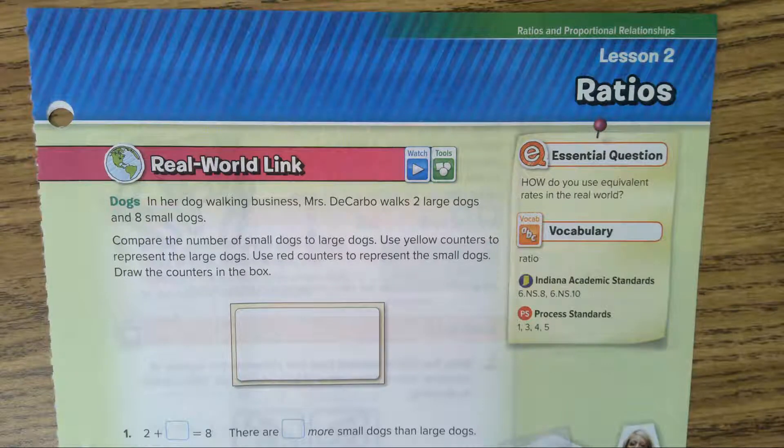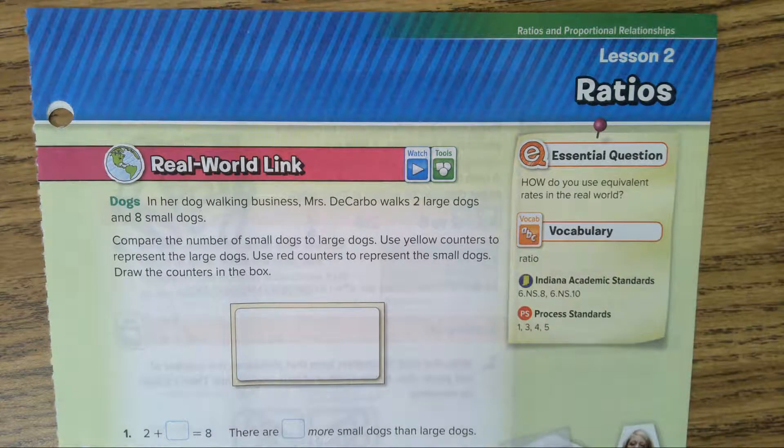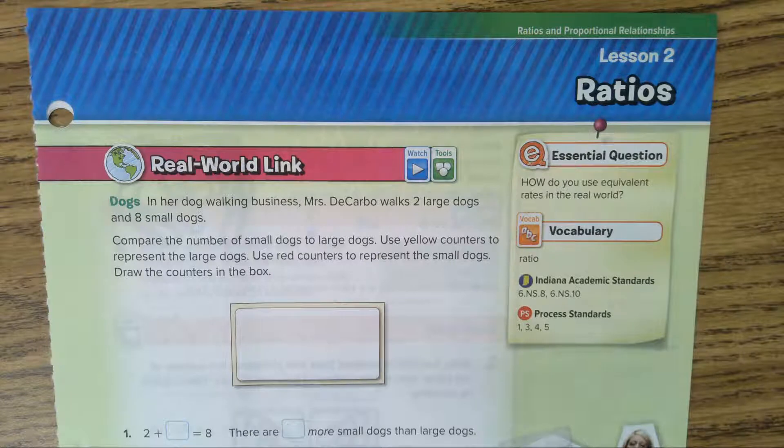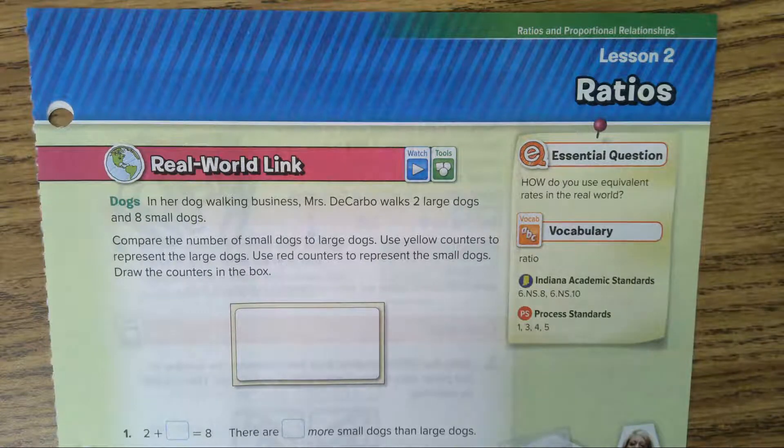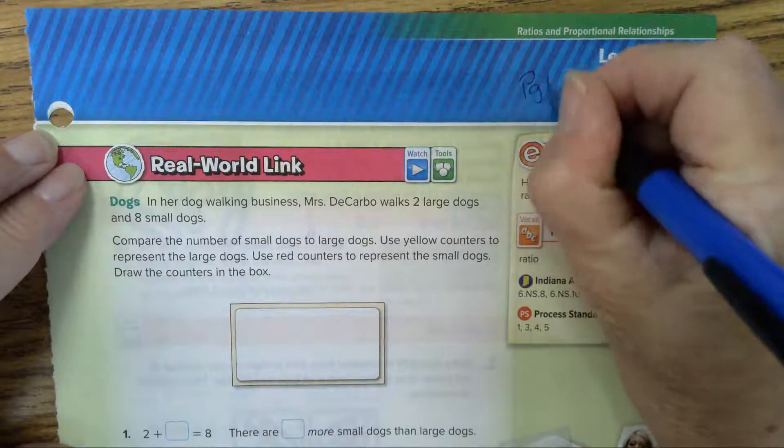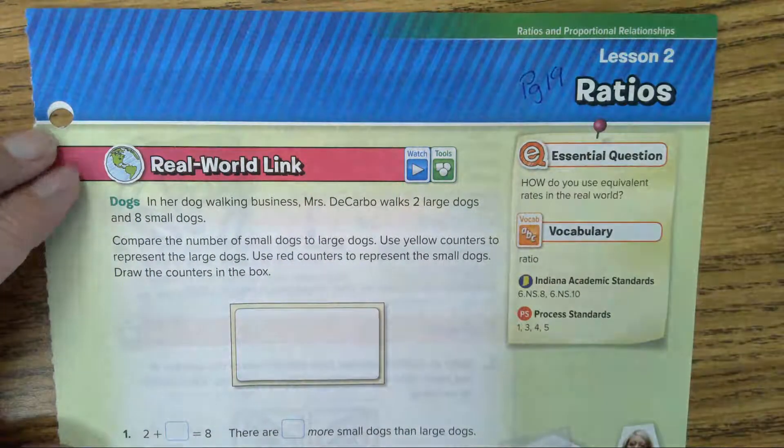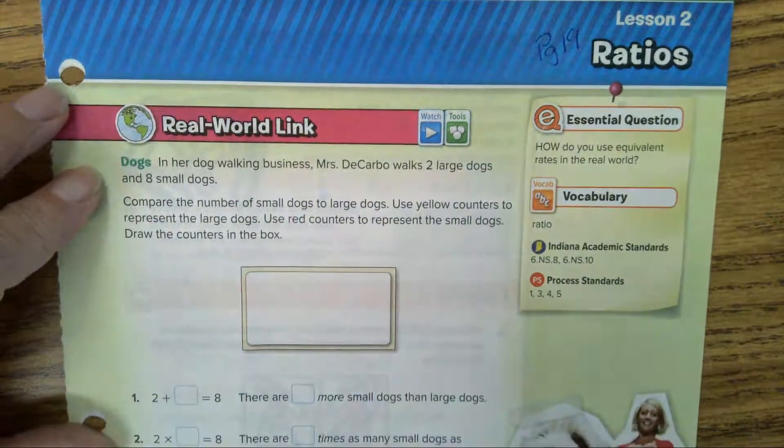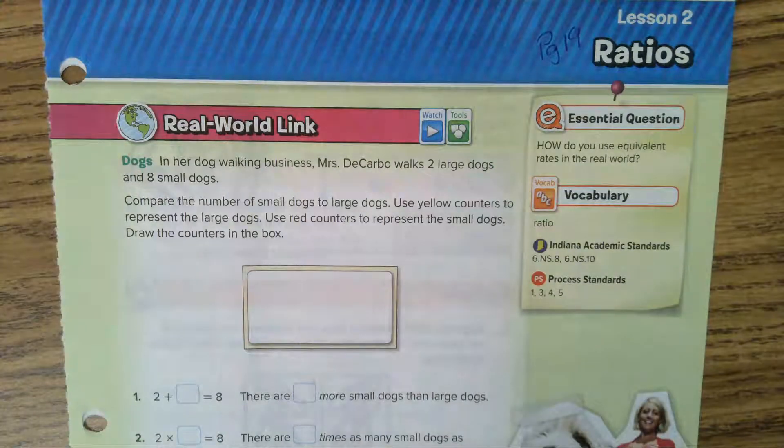Well hello kids, today we are going to be doing Chapter 1 Lesson 2 and it is about ratios. We are on page 19. In the real world link it says dogs...